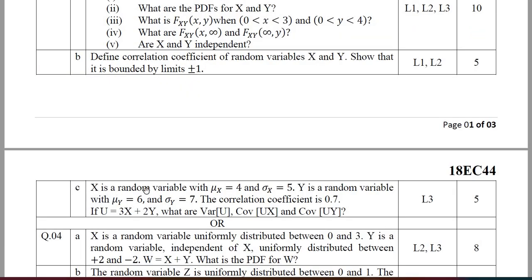For question number 2C, X is a random variable with mean mu_X and standard deviation sigma_X given. Y is a random variable with mean mu_Y and sigma_Y given. The correlation coefficient is 0.7. If U is defined as 3X + 2Y, you are required to find the variance of U, covariance of U and X, and covariance of U and Y.